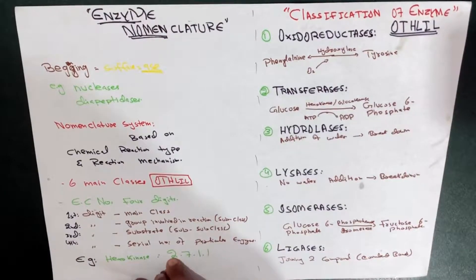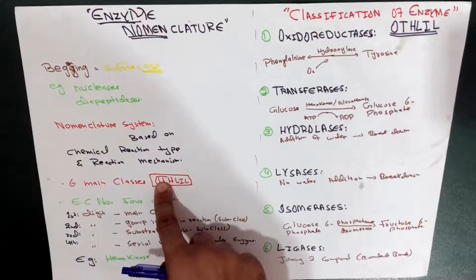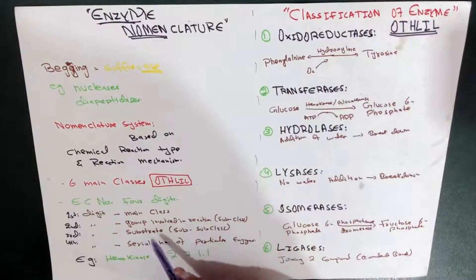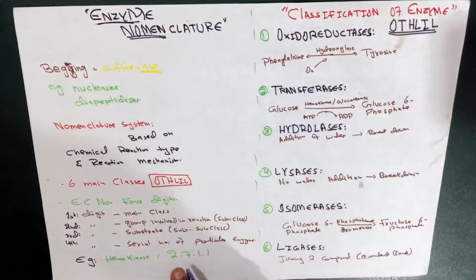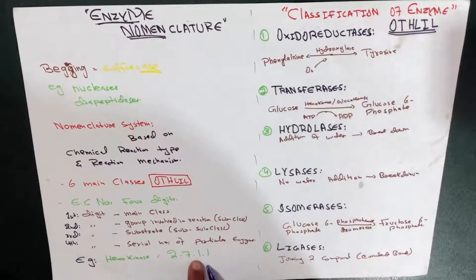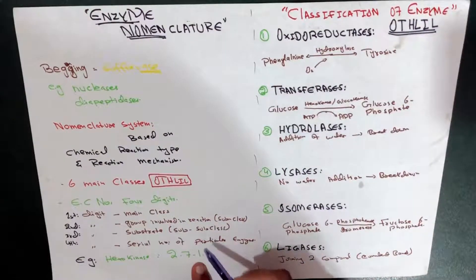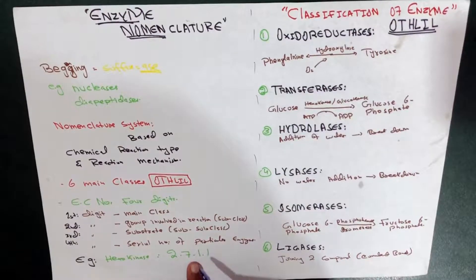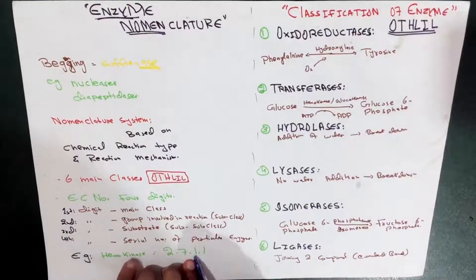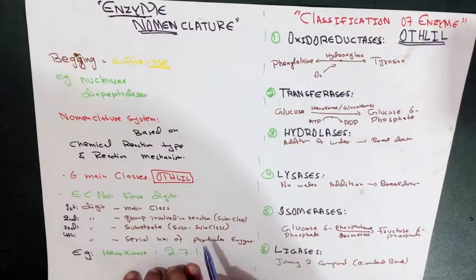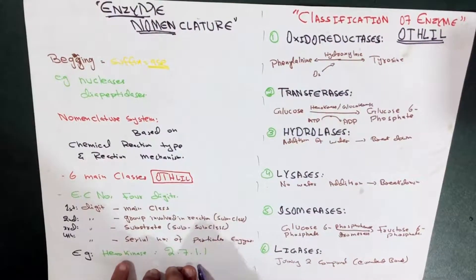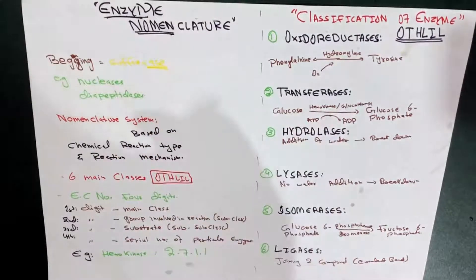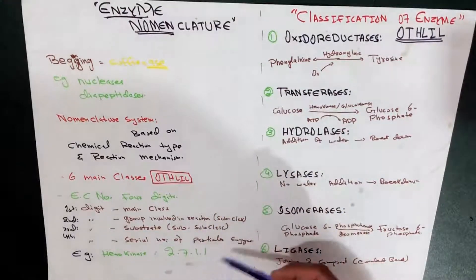So how do we define this? Hexokinase belongs to class 2, which is the transferases (T in OTHLIL). The second digit, 7, is the subclass, representing the transfer of a phosphoryl group. The third digit, 1, is the sub-subclass, indicating that alcohol is the phosphoryl acceptor — the substrate. The last digit, 1, is simply the serial number.